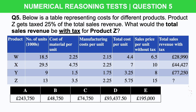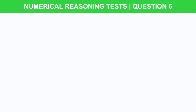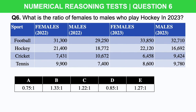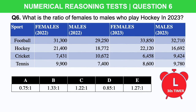Don't worry if you're struggling to do this within the time limit — you need to practice plenty of these question types and you will speed up. I'm going to give you one more to practice: what is the ratio of females to males who play hockey in 2023? Here is the information you need and here are your answer options. I'm going to give you 30 seconds on the timer. If you can't do it within that time, don't worry — just pause the video and let me know your answer in the comment section below.